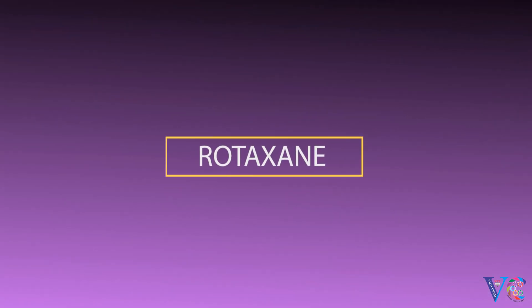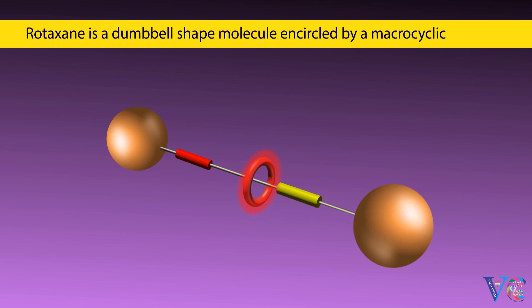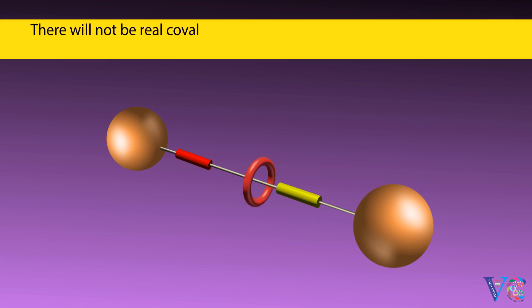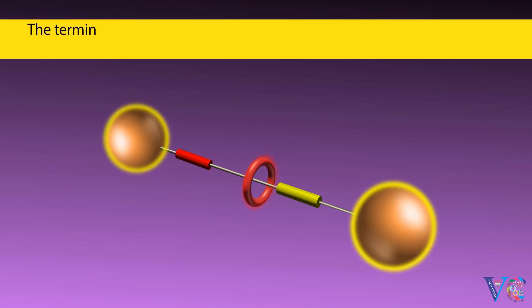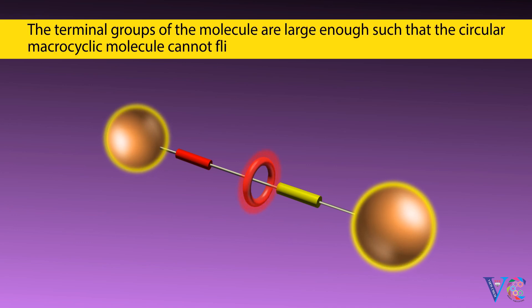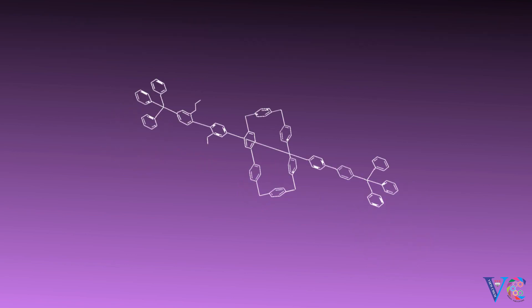Rotaxane is a dumbbell-shaped molecule encircled by a macrocyclic molecule. There will not be real covalent bond between the macrocyclic molecule and the rod-like part of the dumbbell. The terminal groups of the molecule are large enough such that the circular macrocyclic molecule cannot flip out.